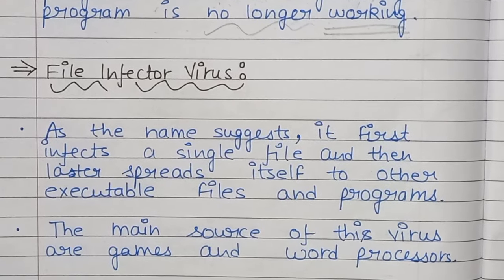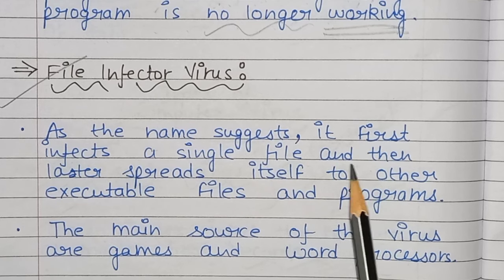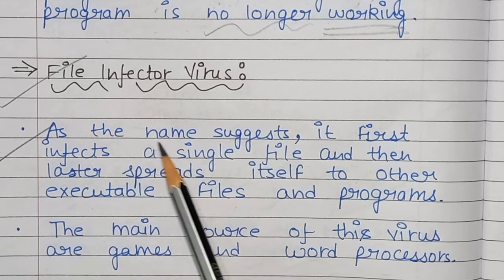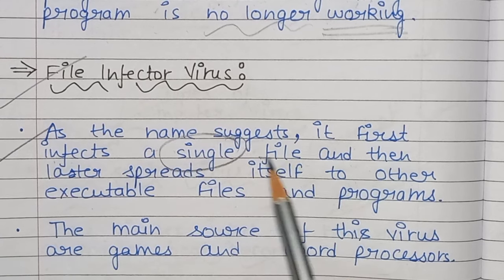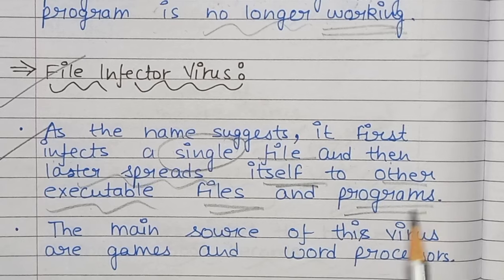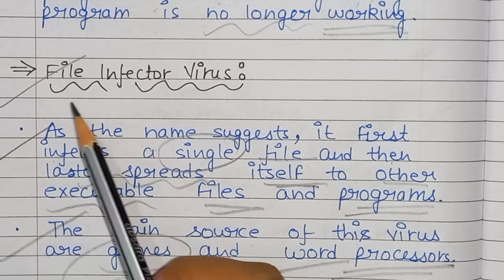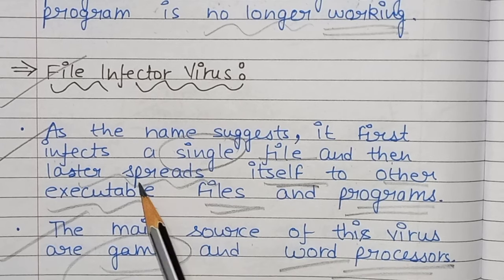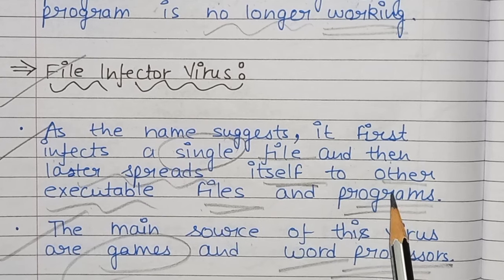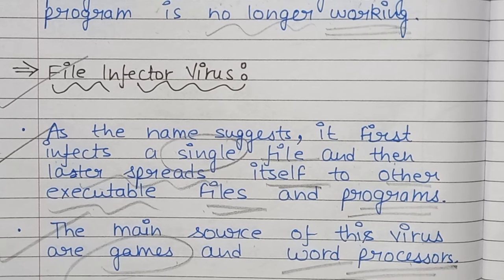Next is file infected virus. As the name suggests, it first infects a single file and then later spreads itself to other executable files and programs. The file infected virus infects a single file and then spreads to other files and programs. The main source of this virus is games and word processors.